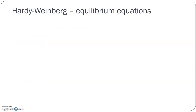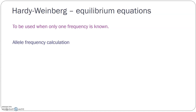The Hardy-Weinberg equilibrium also comes with some math. There are equations to help determine allele and genotype frequencies within a population from just one piece of information. This equilibrium will NOT be used if you're given a whole population. But if you only know one thing, these are the equations you need. The first equation is for allele frequency: P plus Q equals 1, where P is the frequency of dominant alleles and Q is the frequency of recessive alleles.